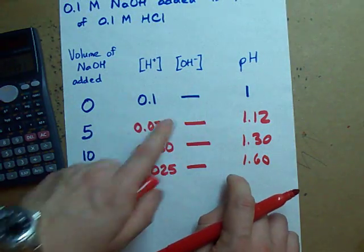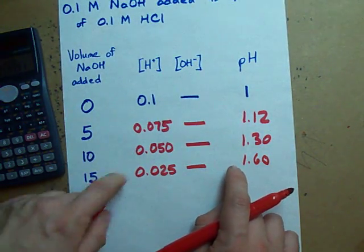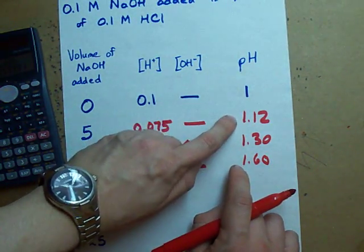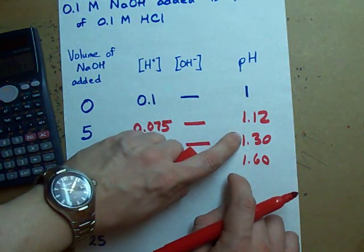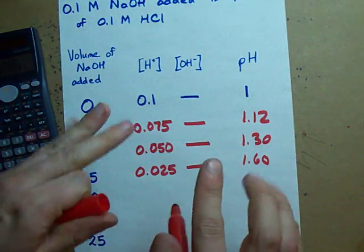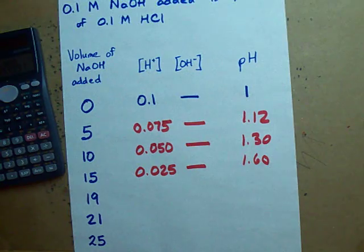You can see the pH every five milliliters that I add, it increased the pH by 0.12, 0.18, 0.3. It's rising faster as we go along.